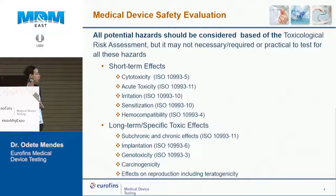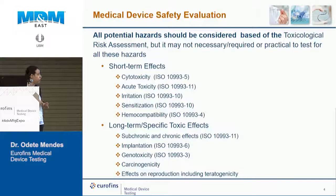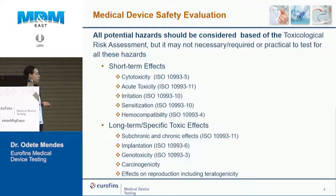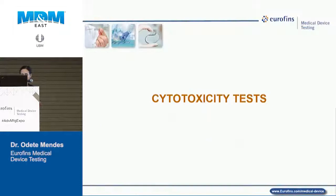The choice of tests depends largely on the toxicological risk assessment done after chemical characterization of your medical device. You perform an extract, analyze it, and based on the chemical constitution of the extract profile, you may need to perform various tests. For short-term clinical use, you evaluate cytotoxicity, acute toxicity, irritation, sensitization, and hemocompatibility. For devices in contact for longer periods, you may need to evaluate chronic implantation, genotoxicity, carcinogenicity, and potentially reproductive effects.